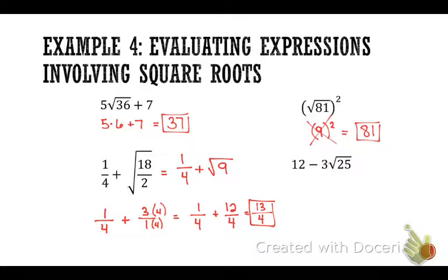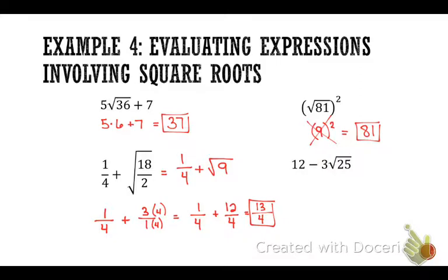Order of operations is so important here, because we must multiply before we can subtract. To multiply, I've got to take the square root of 25 first — that's 5. Then 3 times 5 is 15. So 12 minus 15. If you do 12 minus 3 first and get 9, then say 9 times 5 is 45 — that's wrong. 12 minus 15 is negative 3.